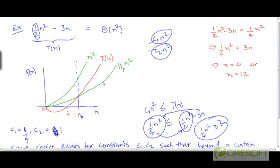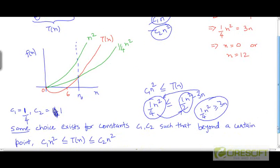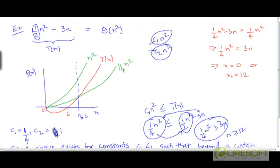The point beyond which t of n is always greater than 1/4 of n squared can be calculated from this inequality. When will 1/4 of n squared be greater than or equal to 3 times n? It will hold when n/4 is greater than or equal to 3, or n is greater than or equal to 12. So once the value of n grows beyond 12, t of n is going to rise above the curve for 1/4 of n squared.